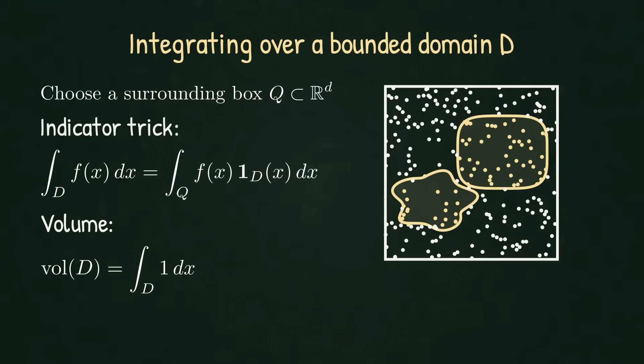On the right, Q is the square outline. D is the yellow region, here drawn with two components. Points in D are shown in yellow. Points outside remain white. Multiplying by the indicator function with respect to D is exactly this coloring.